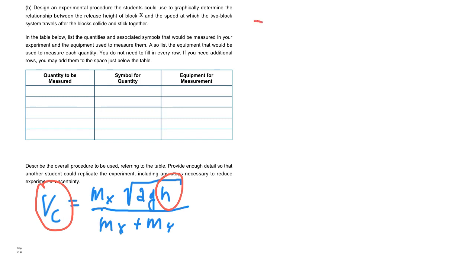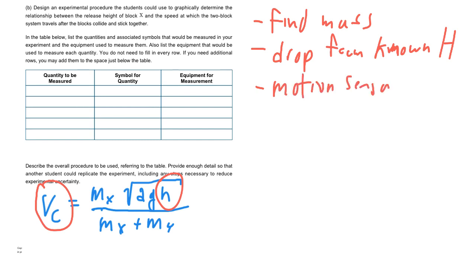So in other words, we can find the mass. So find the mass of everything. We can drop the mass from some height. Drop from known height, or you could say you're going to measure out that height, known height. And then you're going to need something to measure the velocity afterwards. So in our class we use motion sensors often. So use motion sensors to find velocity after the combination.